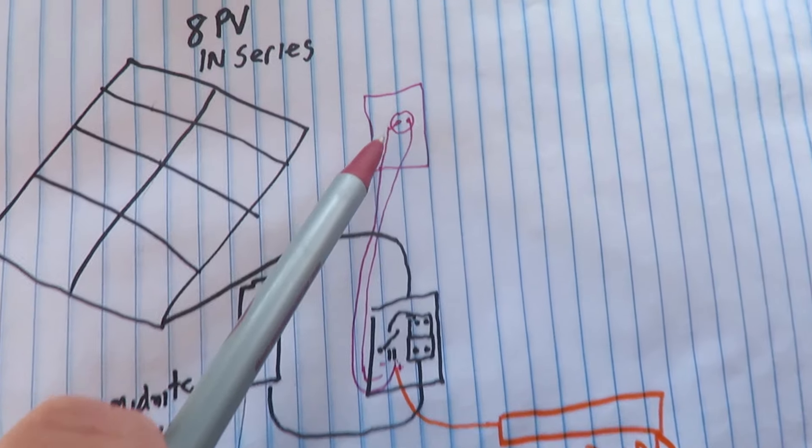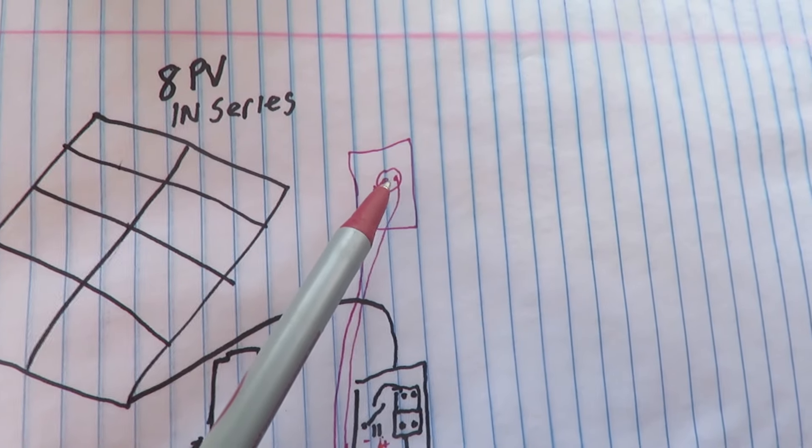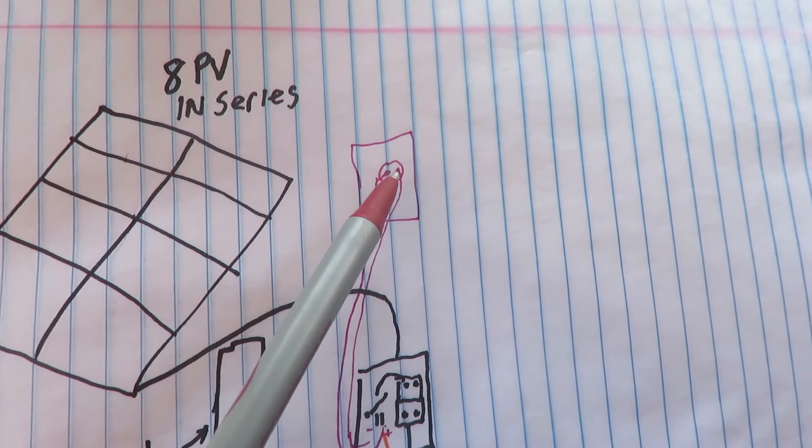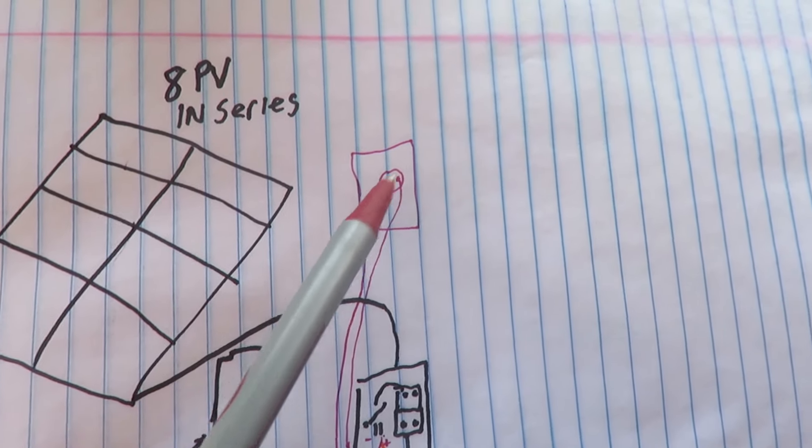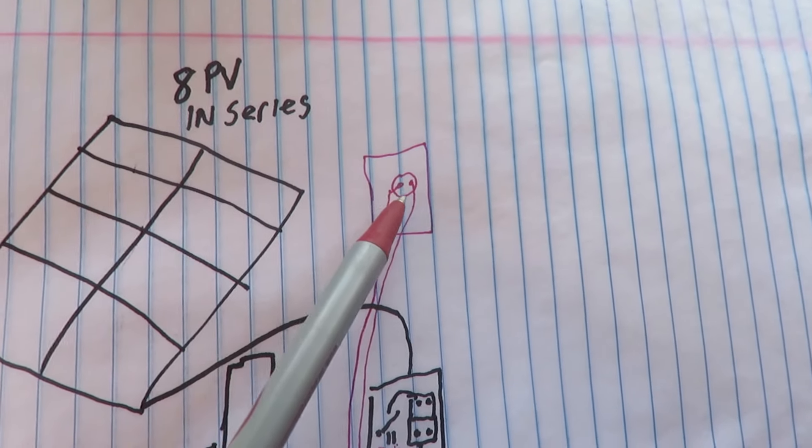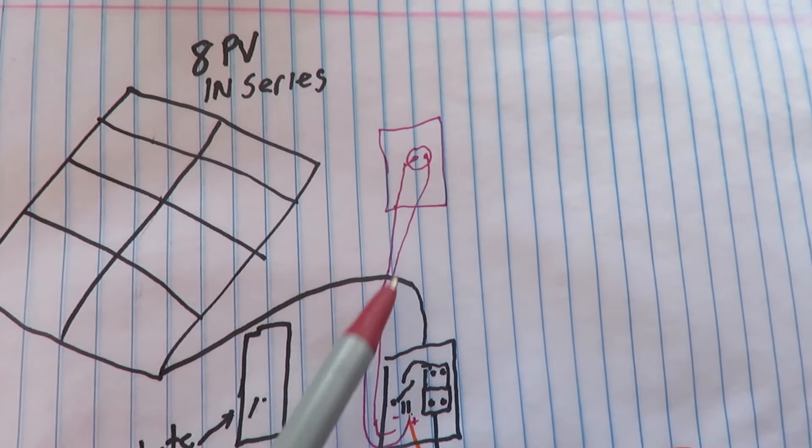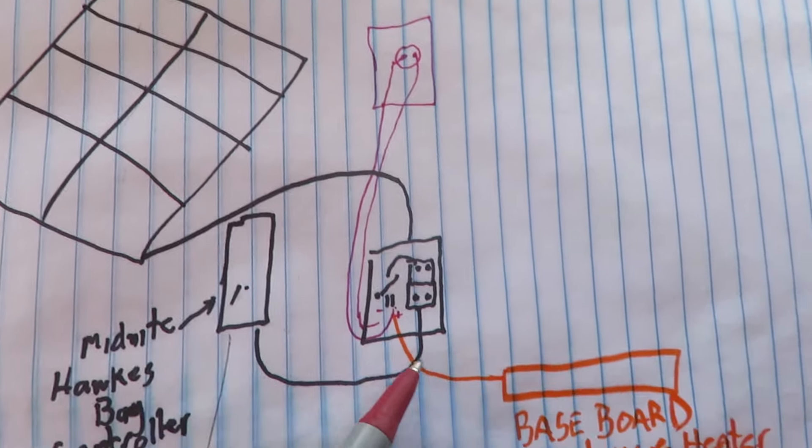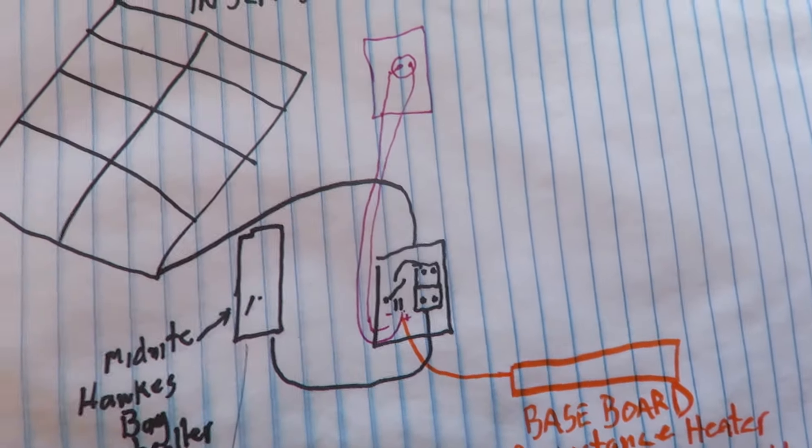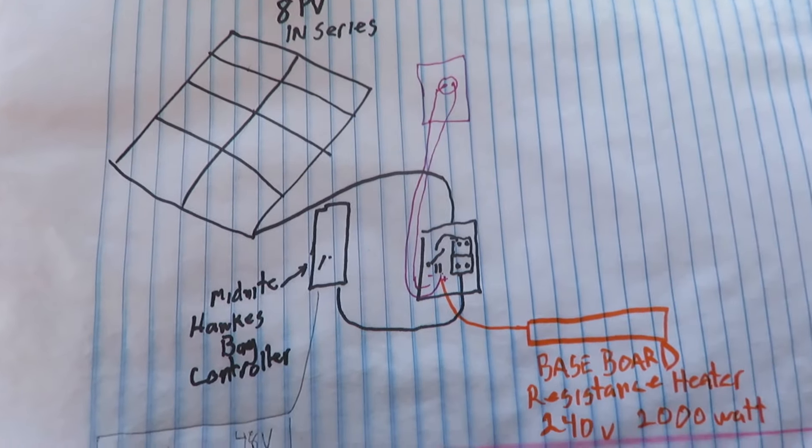That switches on or off, can be controlled by a controller or a thermostat. Right now I have it controlled by an auxiliary contact on a different charge controller, so it's switching the positive which goes to the baseboard. That's my little pictorial, now I'll show the real thing.